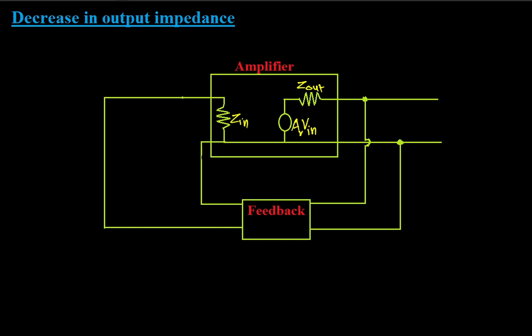The feedback circuit feeds back a fraction MV of the voltage appearing at its input terminal to the input of the circuit. The voltage appearing at the input of the feedback circuit is the output voltage V0. A fraction of this is fed back to the input, so VF = MV·V0. Since the feedback is negative, the actual voltage given to the amplifier is minus VF.